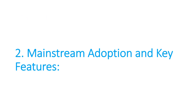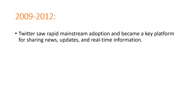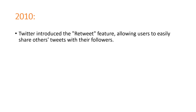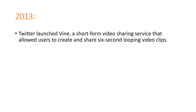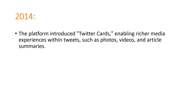The next point is mainstream adoption and key features. From 2009 to 2012, Twitter saw rapid mainstream adoption and became a key platform for sharing news, updates, and real-time information. In 2010, Twitter introduced the Retweet feature, allowing users to easily share other tweets with their followers. In 2013, Twitter launched Vine, a short-form video sharing service that allowed users to create and share six-second looping video clips. In 2014, the platform introduced Twitter Cards, enabling richer media experiences with tweets such as photos, videos, and article summaries.